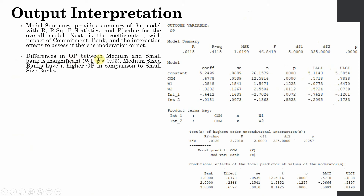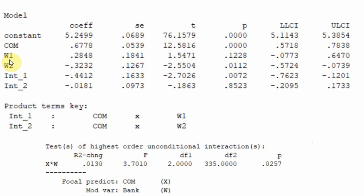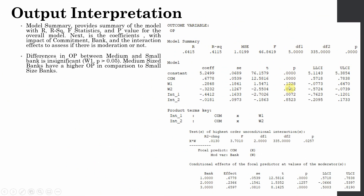Differences in organizational performance between medium and small sized banks are insignificant. W1 represents medium sized banks. Medium sized banks have a higher organizational performance — I say higher because there is a positive sign on the coefficient. So medium sized banks have a higher OP compared to small sized banks, but it is not significantly different because the p-value is greater than 0.05.